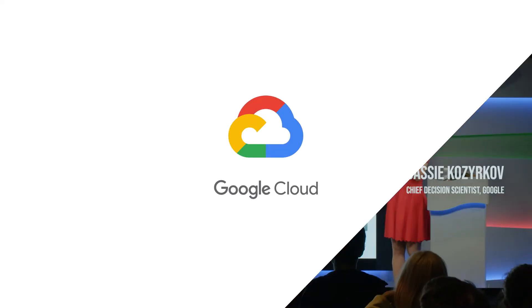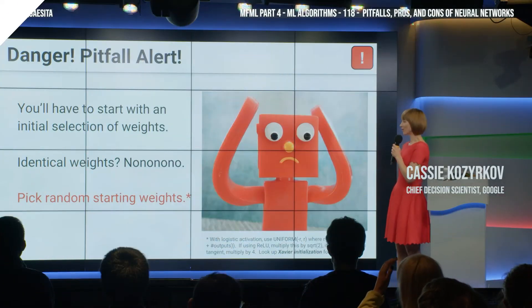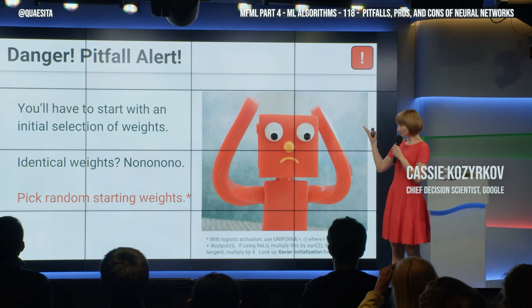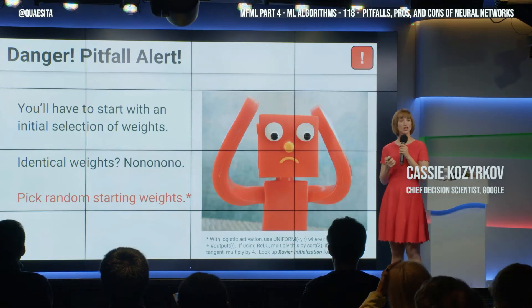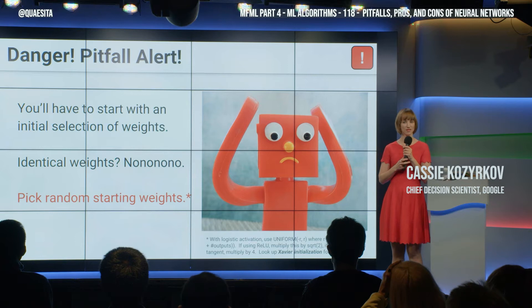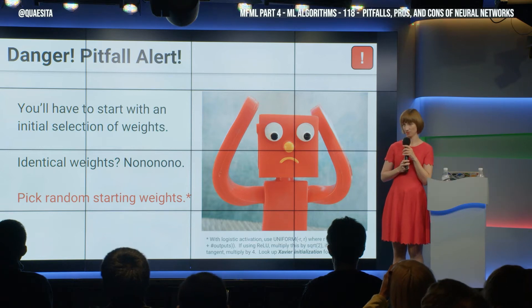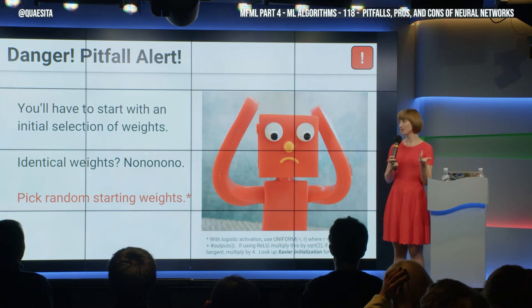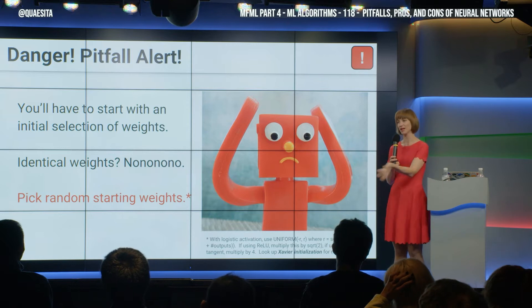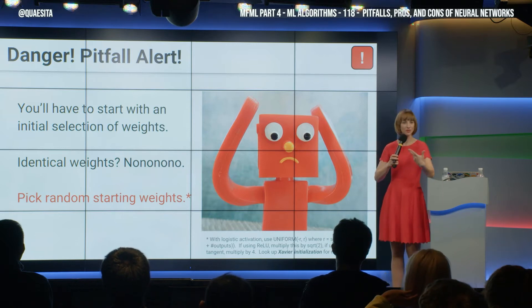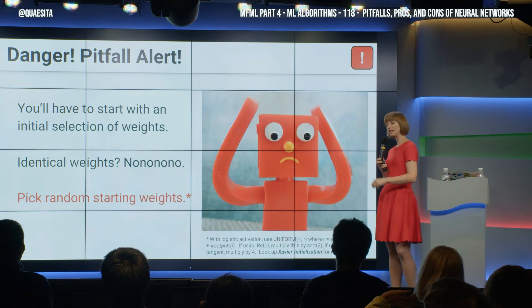Now you'll need to start with an initial selection of weights. Here's what not to do: setting them all to zero. Anything times zero — you already know the answer. The punchline is everything will be zero, and no learning will happen.